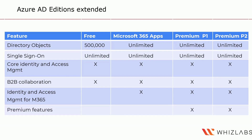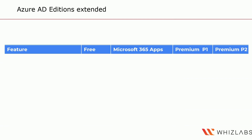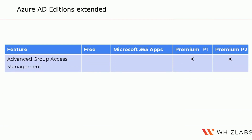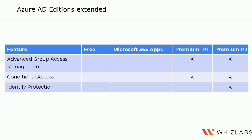Premium features start coming in with P1 and P2. You also have the ability to utilize hybrid identities with P1 and P2. Advanced Group Access Management is also available only with P1 and P2, as is conditional access. Identity Protection is only available in the P2 version. Finally, Identity Governance is also only available in the P2 version.